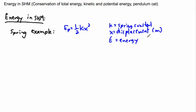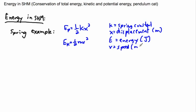Energy is measured in joules. EP means potential energy, whereas EK is kinetic energy. Kinetic energy is the familiar half m v squared, where m is the mass and v is the speed or velocity in meters per second. m is the mass in kilograms.